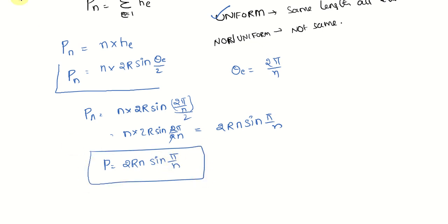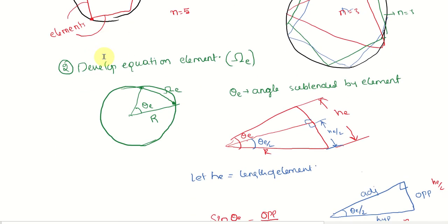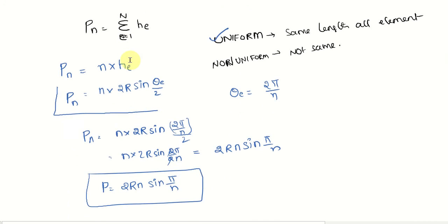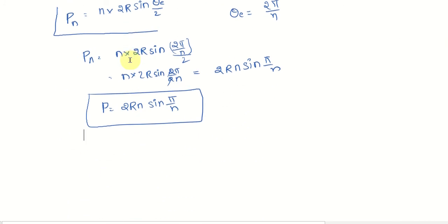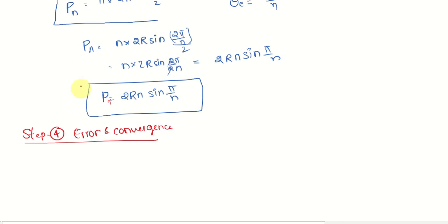Now the fourth step. To recap: step one is to discretize the domain, step two is to develop the equation for one element, step three is assembling all element equations, and step four is to check the convergence and error. We now check how much the approximate value converges to the actual solution 2πR.